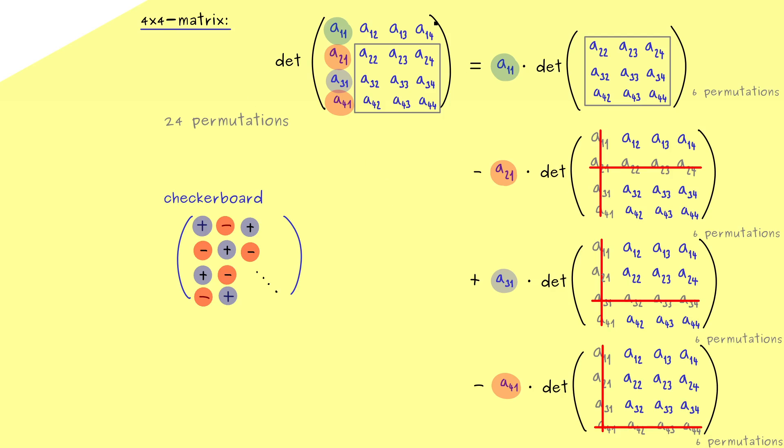Of course, in an explicit calculation you would use the row or the column with the most zeros. Simply because a zero would omit a whole part here. Indeed, we have learned now that we can calculate the determinant of a 4x4 matrix easily without forgetting any permutation. In fact, the only thing you need to remember is this checkerboard pattern. But you can easily generate that as well.